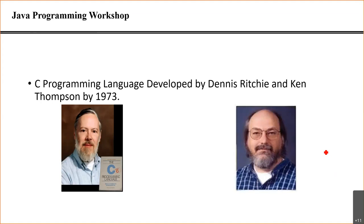They were working at AT&T, also known as Bell Labs — the same Bell Labs associated with Alexander Graham Bell who created the telephone. A lot of inventions have come from that organization. They modified B and created C so they could build the Unix operating system. They created the C programming language just to create a new operating system — geniuses.